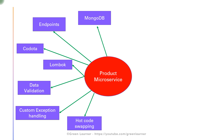Then came a very important part: when we are developing a microservice and the server is running, any code change required us to restart the server so that the new code changes could take effect. But we introduced Spring Boot Dev Tools, which allowed us to hot-swap the code without restarting the service, saving us time by stopping the need to restart after every single line of code change.